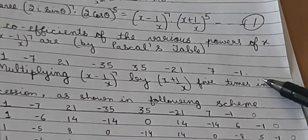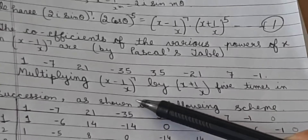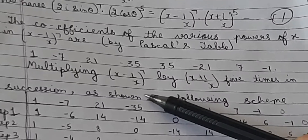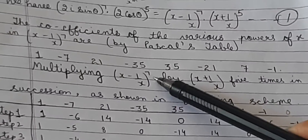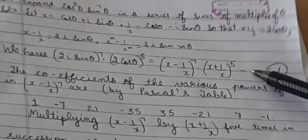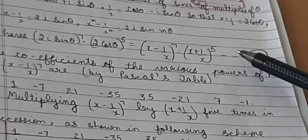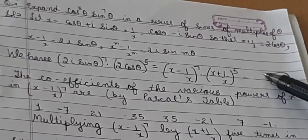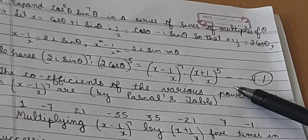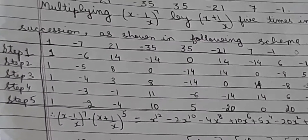These are the coefficients when we expand (x − 1/x)⁷. Now we must multiply (x − 1/x)⁷ by (x + 1/x)⁵. Since the power is 5, we multiply 5 times. We set up a table writing all coefficients of (x − 1/x)⁷ and multiply by (x + 1/x) five times.